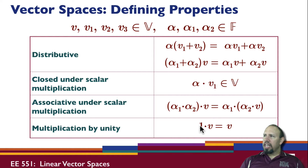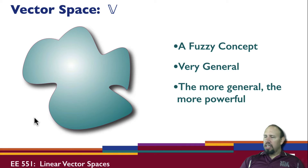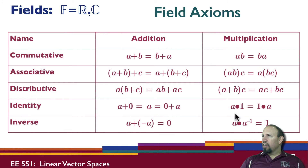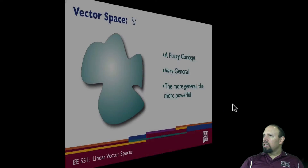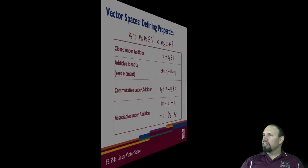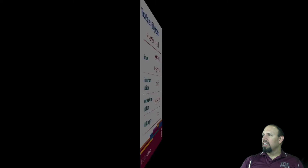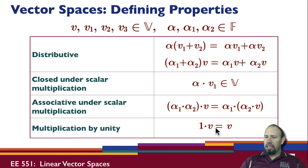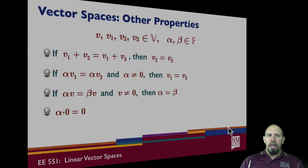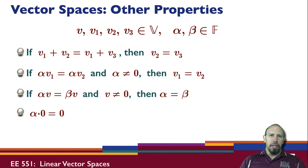Multiplication by unity: one must be in the field. Remember the field has a multiplicative identity — the one element must be in the field. So one times a vector gives the vector back. Those are the defining properties of a vector space. There are other properties of a vector space that are not defining properties but can be proven from the defining ones.